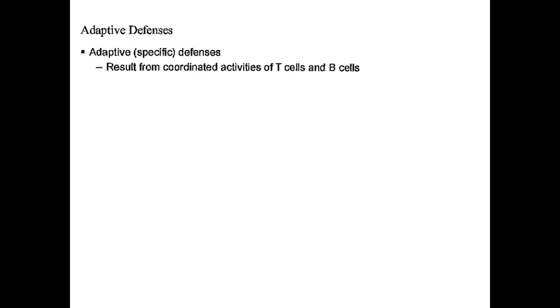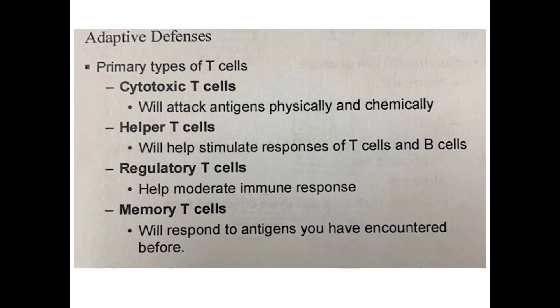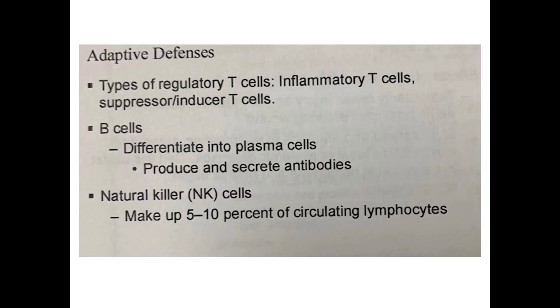Now we're turning to adaptive defenses. Adaptive or specific defenses result from the coordinated activities of T cells and B cells. The main types of T cells include cytotoxic T cells, which attack antigens physically and chemically; helper T cells, which stimulate responses of T cells and B cells; regulatory T cells, which moderate the immune response; and memory T cells, which respond to antigens encountered before. Types of regulatory T cells include inflammatory T cells and suppressor or inducer T cells.